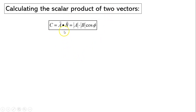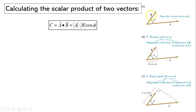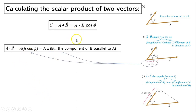Calculating the scalar product of two vectors. Here is the equation. We place B and A together. We can rearrange it as the magnitude of A times B cosine phi. B cosine phi — look at the diagram — is a component of B projected on vector A. So it's the magnitude of A times the B component parallel to A.